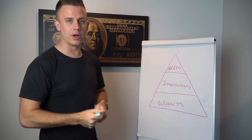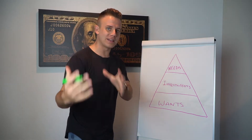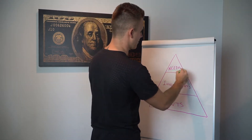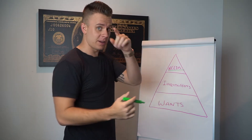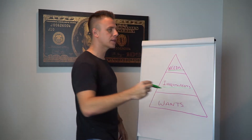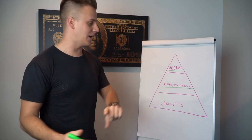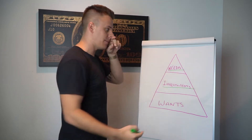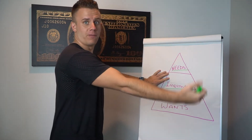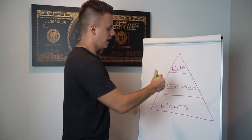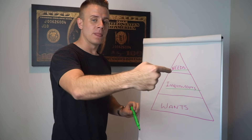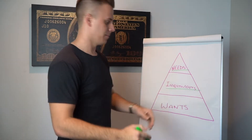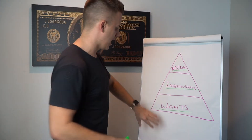Taking a look at this triangle, I thought this might be a decent way to put it into perspective. First and foremost, you have your needs. You have investments — things you can put your money in where your money is working for you rather than you working for your money. A lot of people are trading time for money. An investment is something where your money actually makes you more money without giving it any time. And you have your wants.